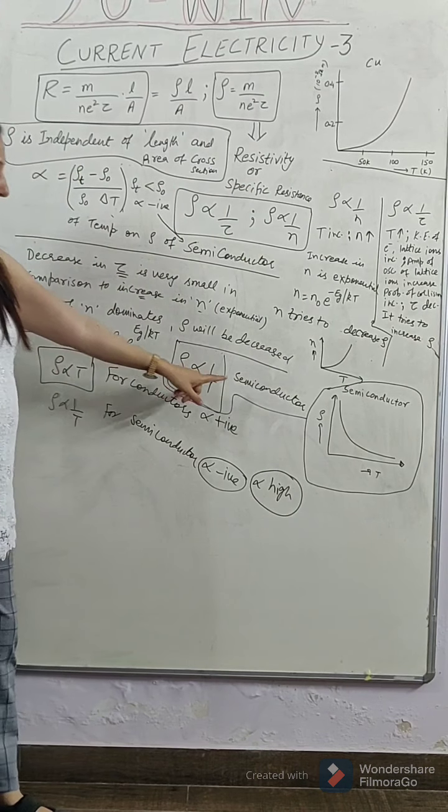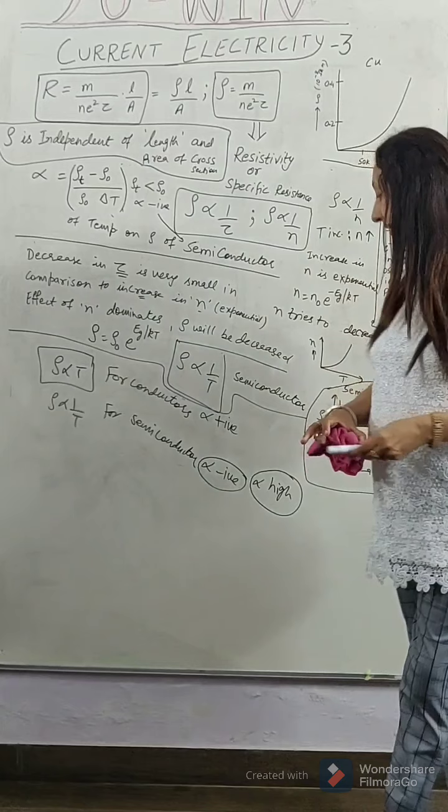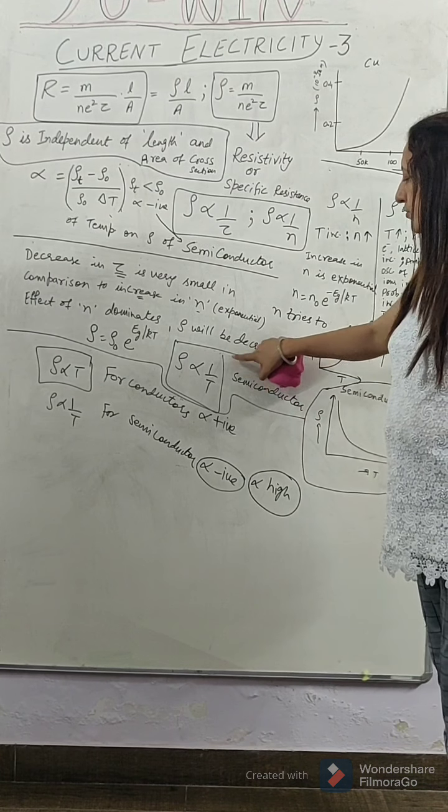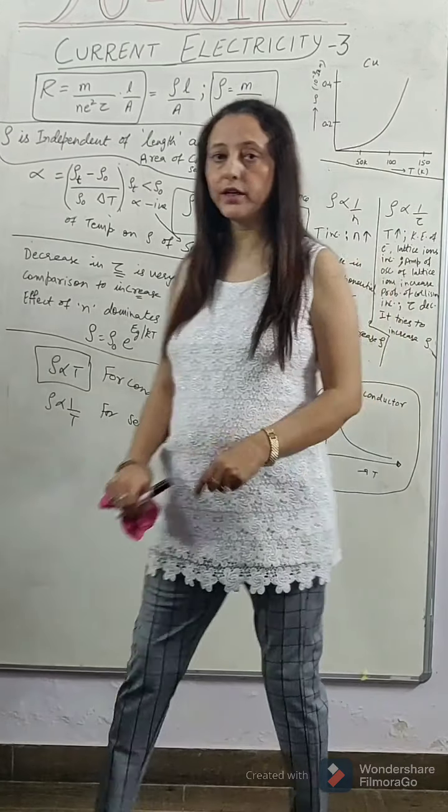And, the relation for semiconductor is also for insulators, but it is less. Because, in semiconductor, electrons are covalently bonded in crystal structure. So, they get easily broken up.